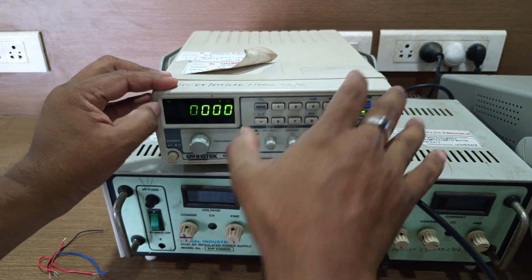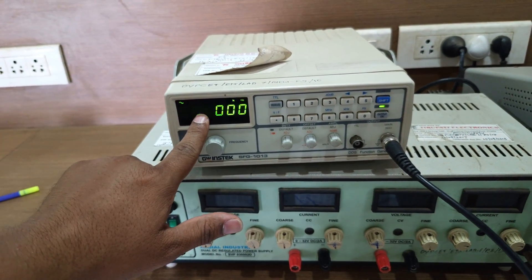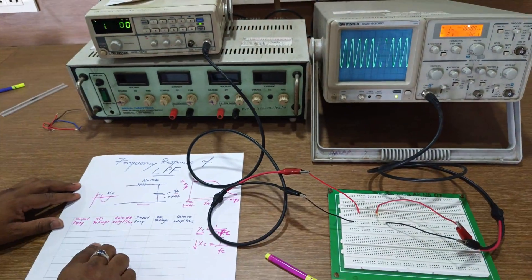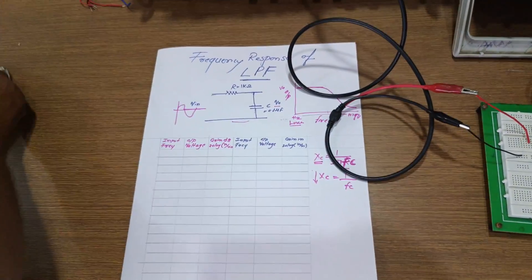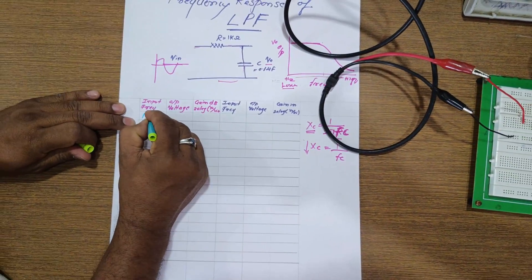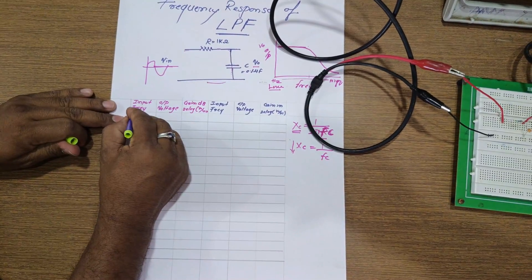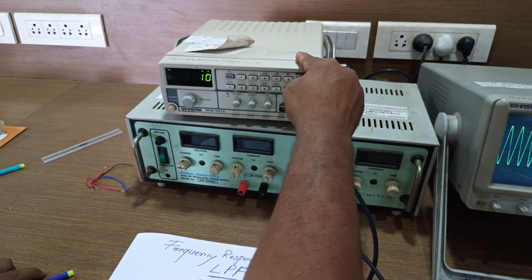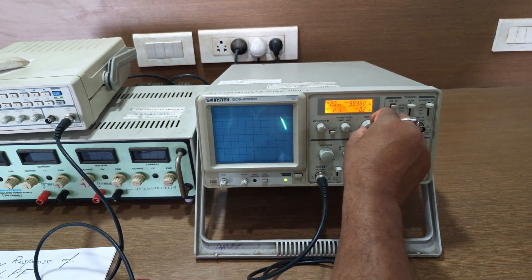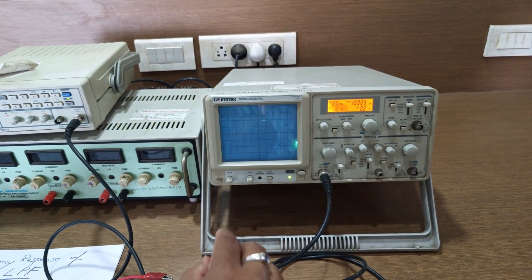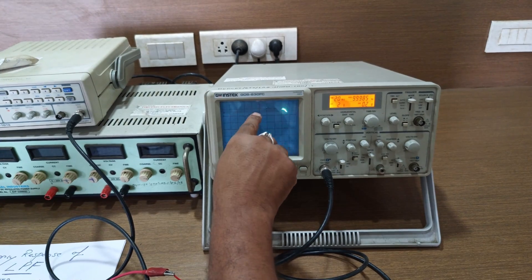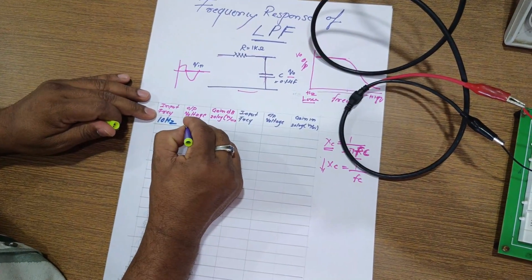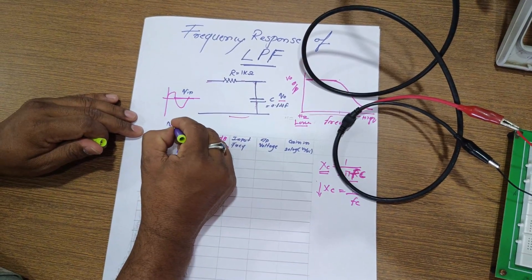At present the frequency is 1 kilohertz, but we are going to start with 10 hertz and check what the output will be, then do the calculations. On paper, first we are going to note down the output for 10 hertz. I have set it to 10 hertz, and checking the output: 1, 2, 3, 4, 5 — channel 1 reads 5 divisions times 2, which is 10 volts. So for 10 hertz we are getting 10 volts peak-to-peak. The input V-in is 10 volts peak-to-peak.